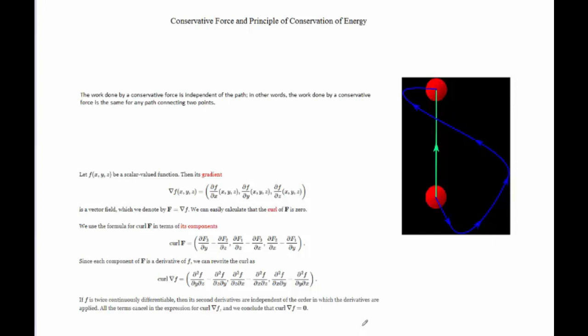Let's say we have a particle and we have a position vector r that is equal to x i plus y j plus z k. These are the unit vectors i, j, k.